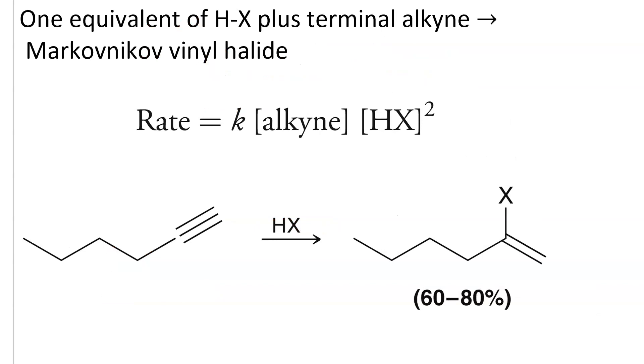Still, when we have a terminal alkyne like the one shown here, and we react it with a single equivalent of a haloacid—HX here could be HI, HCl, or HBr—we end up with a vinyl halide. Vinyl, this word right here, that means that it's one of the double bonded carbons that has the halogen. That's the vinylic position.